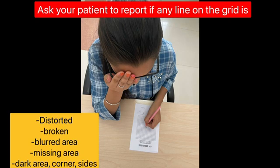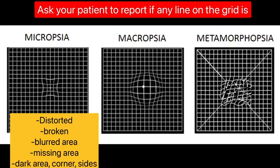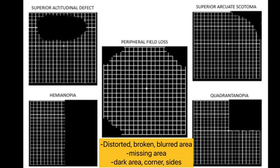While the patient is looking at the dot, ask them to report if any line on the grid is distorted, broken, or if they are seeing a blurred area, missing area, or a dark area either at the corners or the sides. You can ask questions like: do all the boxes on the grid look square and the same size? Are there any missing areas or dark areas on the grid? Can they see all the corners and sides of the grid while keeping their eye on the central dot?